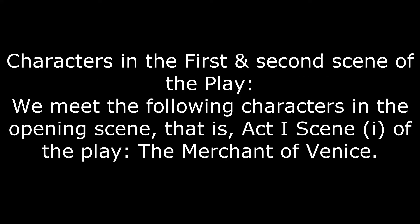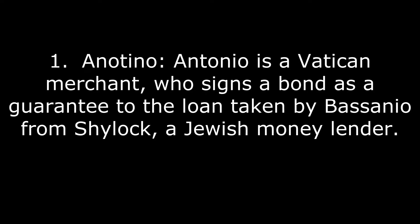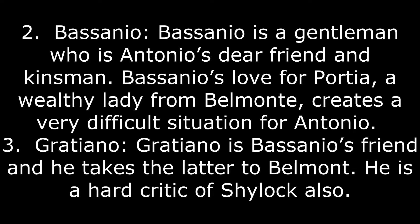Characters in the first and second scene of the play. We meet the following characters in the opening scene, that is Act 1, Scene 1 of The Merchant of Venice. First, Antonio — a Venetian merchant who signs a bond as a guarantee to the loan taken by Bassanio from Shylock, a Jewish moneylender. Second, Bassanio — a gentleman who is Antonio's dear friend and kinsman. Bassanio's love for Portia, a wealthy lady from Belmont, creates a very difficult situation for Antonio.